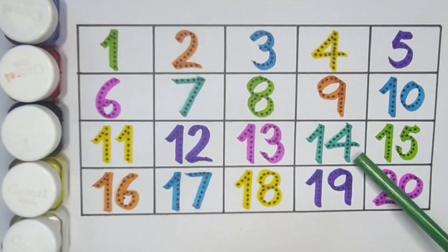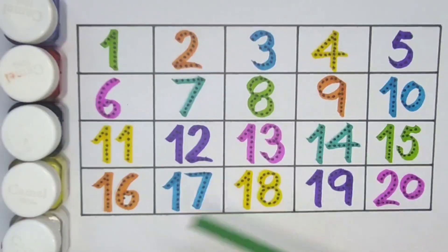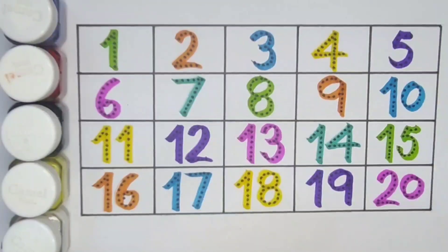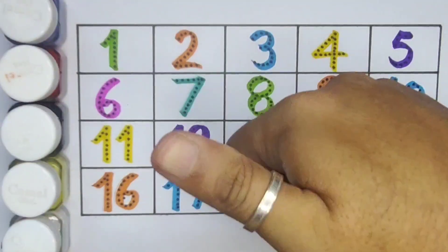Fifteen, one five fifteen, sixteen, one six sixteen, seventeen, one seven seventeen, eighteen, one eight eighteen, nineteen, one nine nineteen, twenty, two zero twenty.